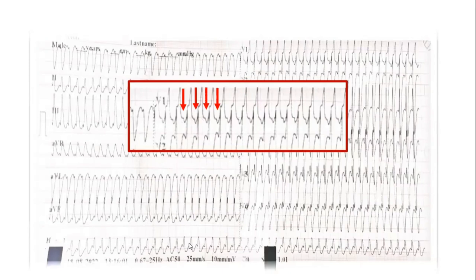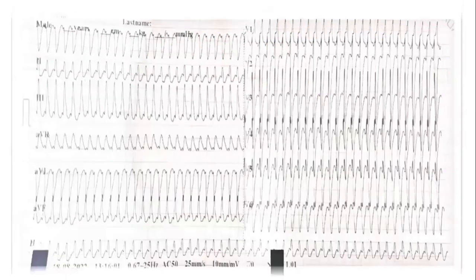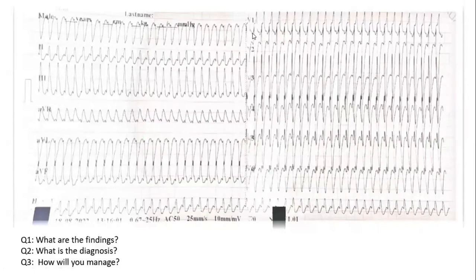Can VT present with such fast one-to-one conduction? Unlikely. So what SVT will present like this? It's anti-dromic AVRT — yes, you're right. This is anti-dromic AVRT. The conduction was going through the pathway anterograde. It's a right bundle so it's more a left-sided pathway. Lead AVF is negative so this means the left free wall is predominantly getting activated.